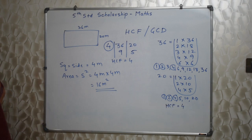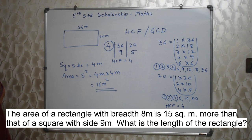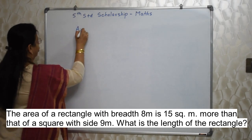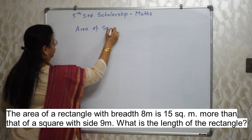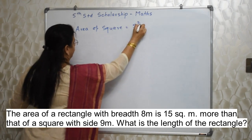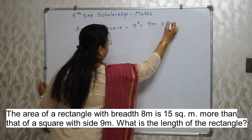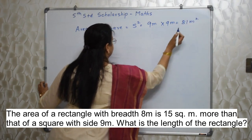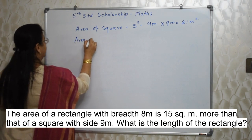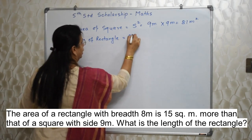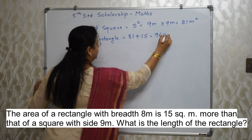Next sum: the area of a rectangle with breadth 8 meter is 15 meter square more than that of a square with side 9 meter. What is the length of the rectangle? The area of the rectangle is dependent on the area of the square, so first we need to find out the area of the square. Formula: side squared — so 9 meter × 9 meter = 81 meter square. Now they are saying area of rectangle is 15 meter square more than the square, so we need to add: 81 + 15 = 96 meter square.